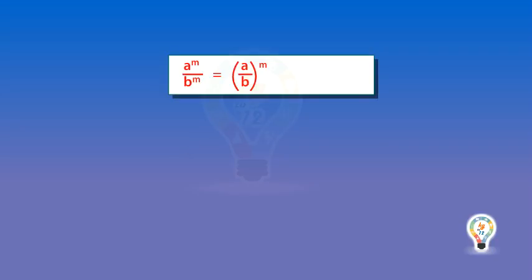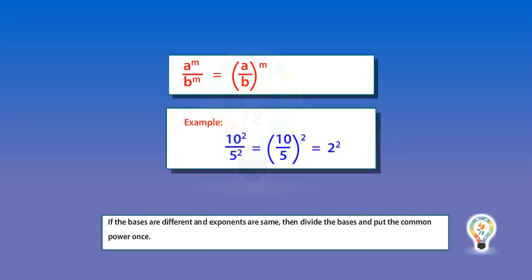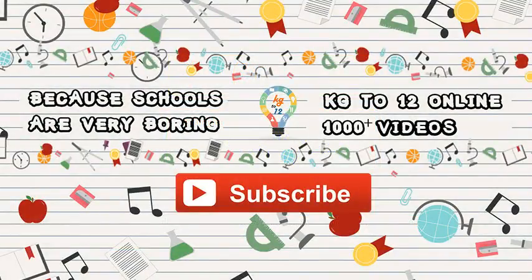Next law of exponents is in case of division, if the bases are different and exponents are same, then divide the bases and put the common power once.